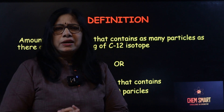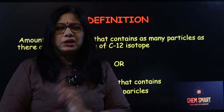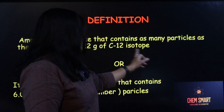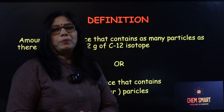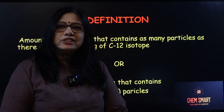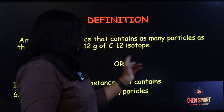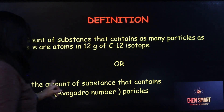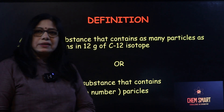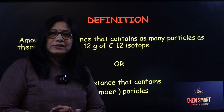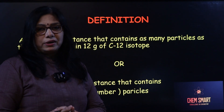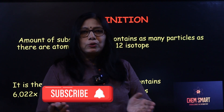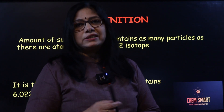You know carbon has different isotopes: carbon-12, 13, 14. So we are taking the carbon-12 isotope here as the standard.